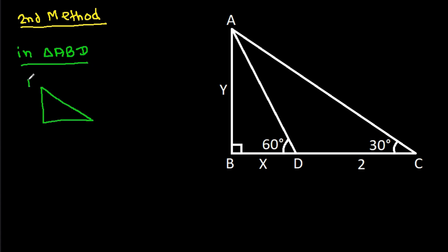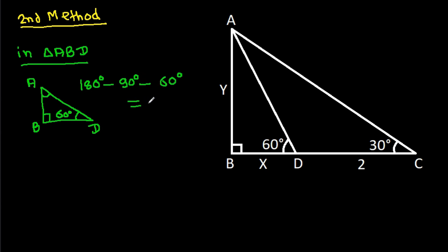For the second method, consider triangle ABD: this angle is 90 degrees and this angle is 60 degrees. So the remaining angle equals 180° − 90° − 60° = 30 degrees. This angle is 30 degrees.